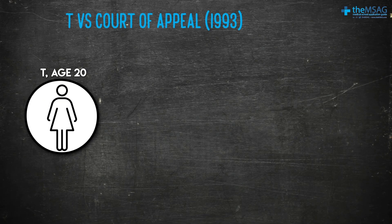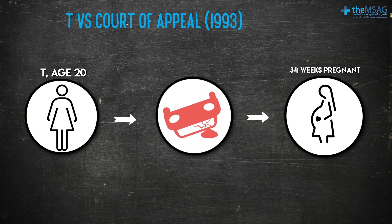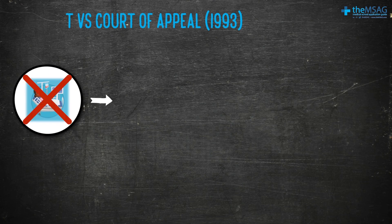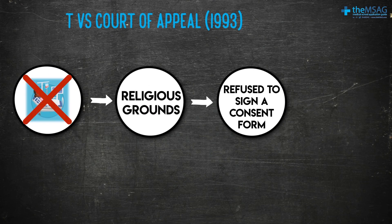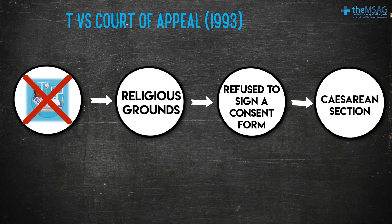Before we finish, let's take a look at modern interpretations of the law regarding autonomy. In 1993, a famous case made the legal standpoint very clear. T was a 20-year-old woman who had been injured in a car accident when she was 34 weeks pregnant. During her admission, she refused a blood transfusion on religious grounds and refused to sign a consent form. She underwent an emergency caesarean section and sadly her baby was stillborn.